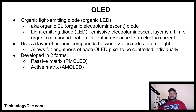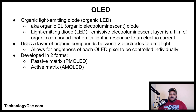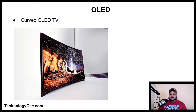OLED, or organic light emitting diode, also known as organic EL or organic electroluminescent diode, is a light emitting diode in which the emissive electroluminescent layer is a film of organic compound that emits light in response to an electric current. An OLED display uses a layer of organic compounds between two electrodes to emit light, allowing the brightness of each pixel to be individually controlled. OLED displays come in two forms: passive matrix (PMOLED) and active matrix (AMOLED). Here is a picture of a curved OLED TV, which shows clearer viewing angles compared to an LCD.